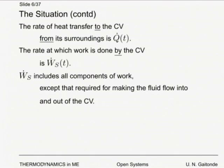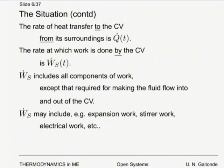Ẇ_s contains all components of work: expansion work (PDV work), stirrer work, shaft work such as extracting power from an engine — everything except the work required to push fluid in and pull fluid out of the system. That flow work is taken into account separately. So Ẇ_s includes expansion work, stirrer work, and everything else except the work required for making the fluid flow into and out of the control volume.